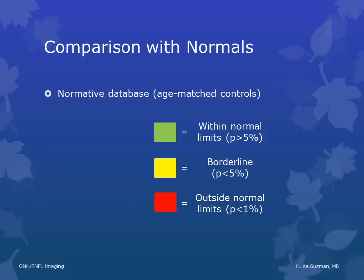Regarding the age-matched database: if flagged as green, that's considered within normal limits, meaning there's a 95% chance that the patient's results are normal. If it's yellow, that's considered borderline, meaning there's a less than 5% chance of that patient's results being normal. And if flagged as red, that's considered outside normal limits, meaning there's a less than 1% chance of that patient's results being normal.